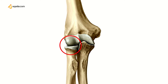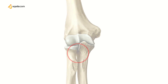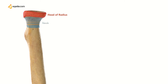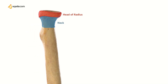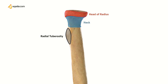The proximal radial-ulnar joint is formed by the articulation between the broad medial portion of the head and the radial notch of the ulna. The neck is a narrow area of bone which lies between the radial head and the outspread tuberosity. The radial tuberosity is a bony projection which provides the attachment site of the biceps brachii muscle.